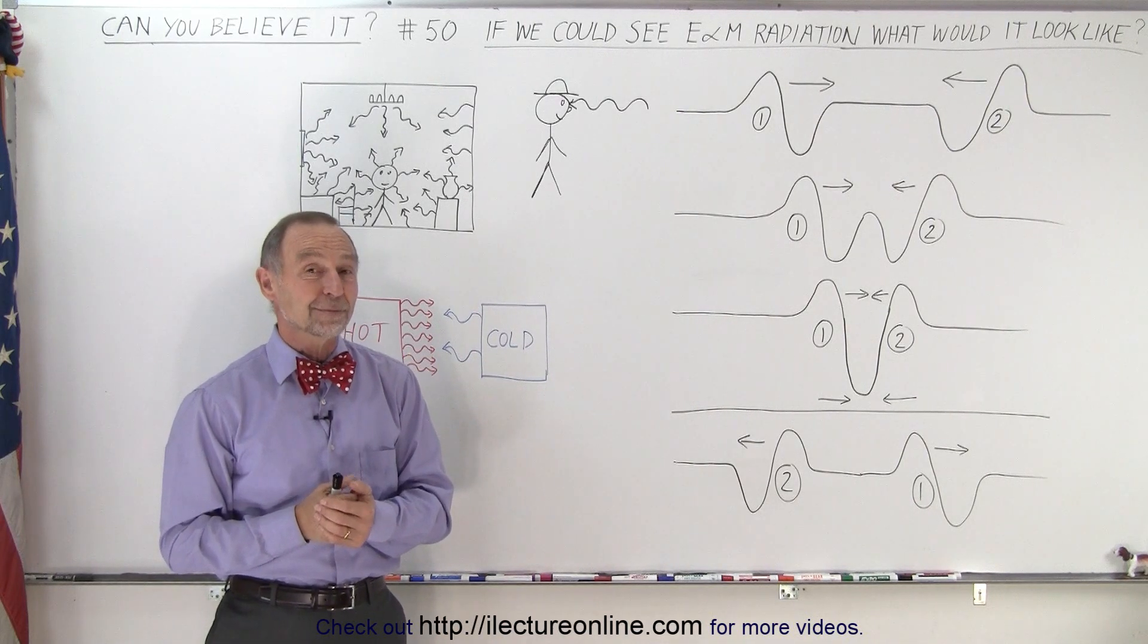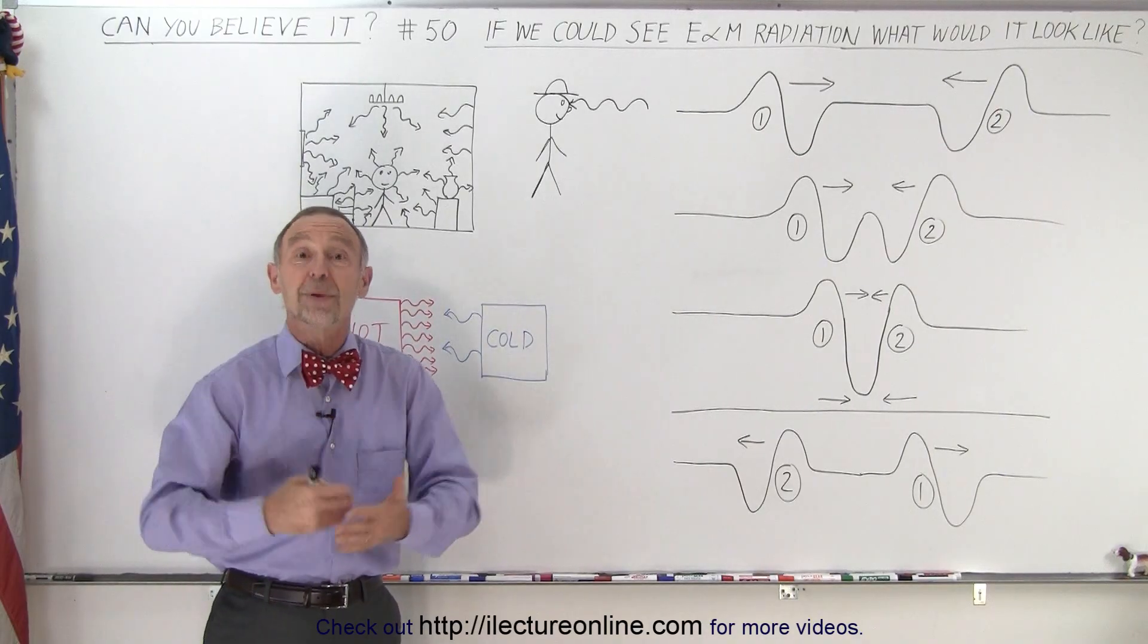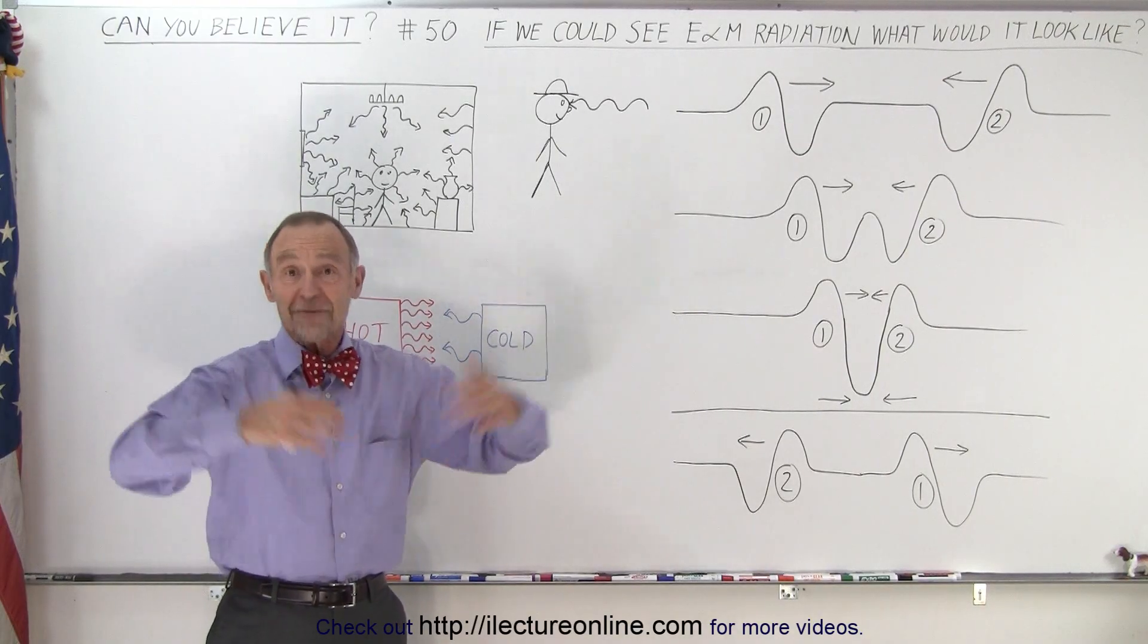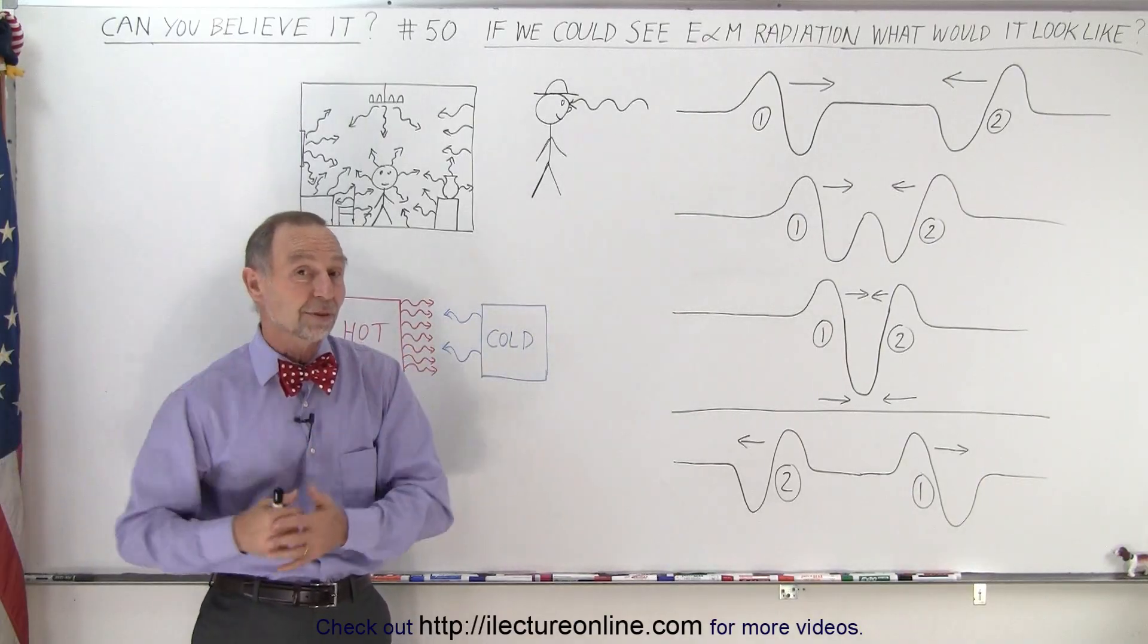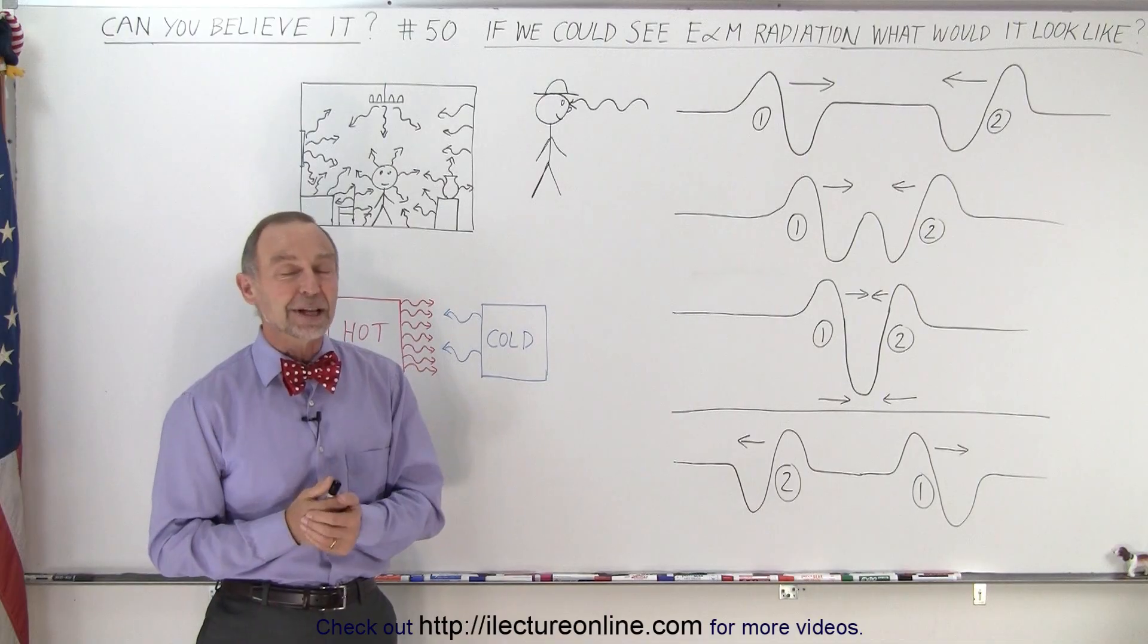That would be a big difference. So night wouldn't exist for us if we could see infrared radiation. We would see everything all the time, regardless of how much light there was, if the sun was up or not. We can't, and there's probably a good reason for that.